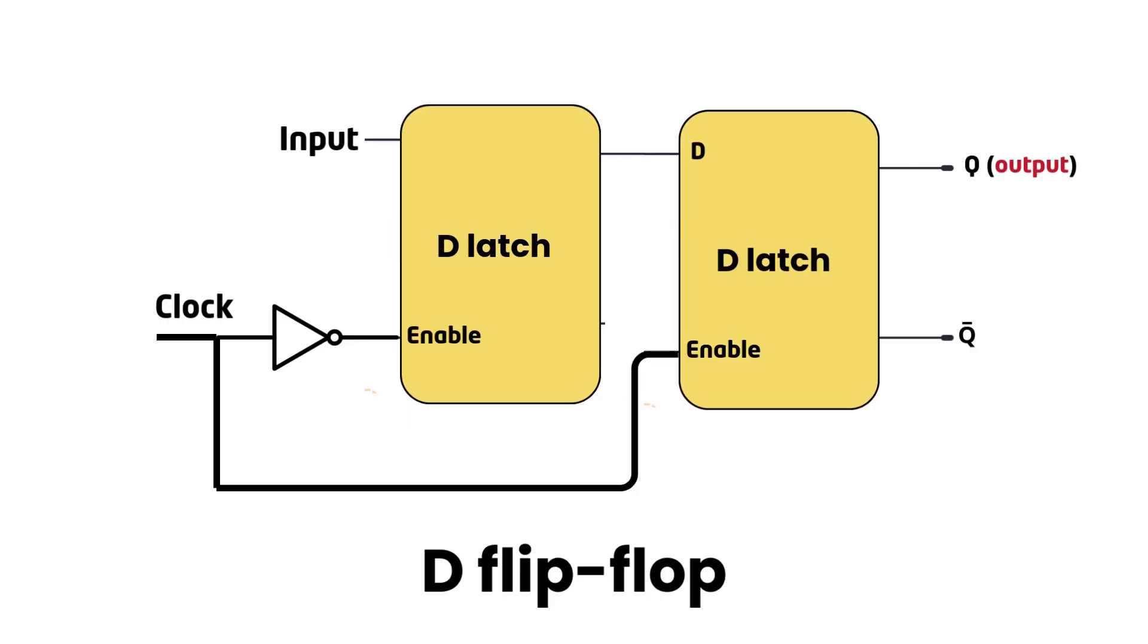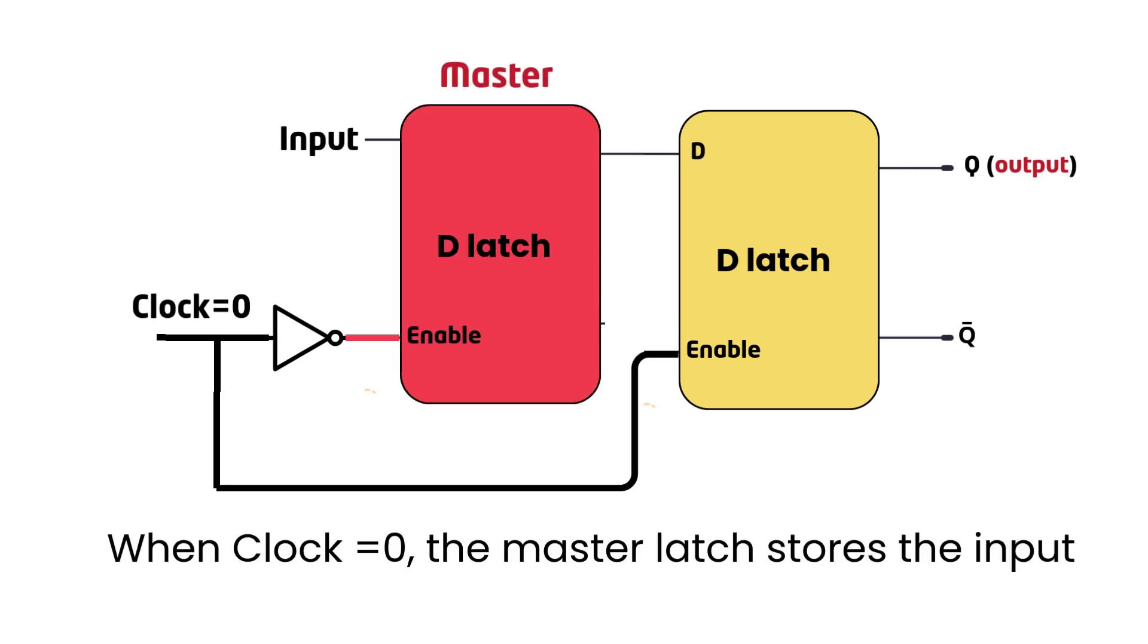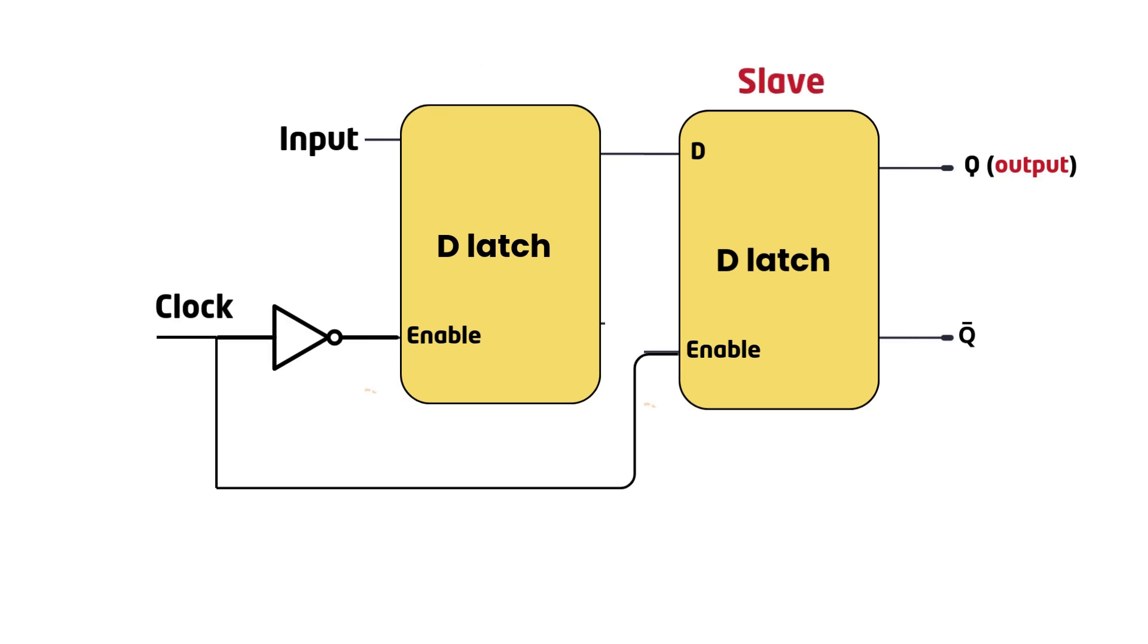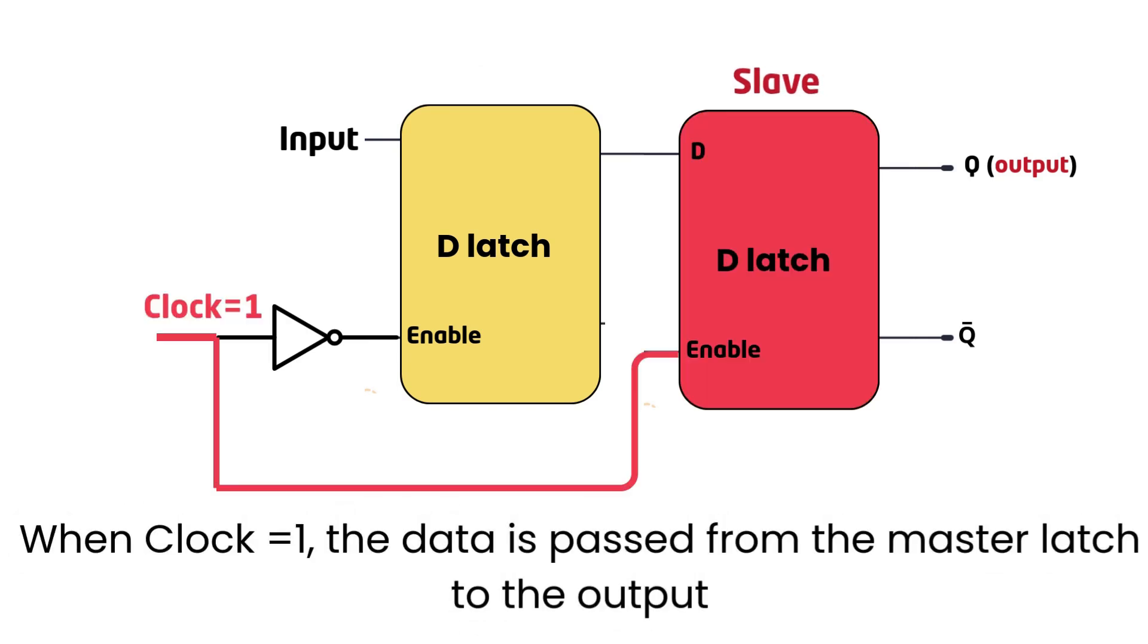A D flip-flop captures data only at the rising edge of the clock, ensuring stable and predictable operation. It is built using two D latches in a master-slave configuration, which allows it to function as an edge-triggered device. The first D latch is called the master latch. This latch is enabled when the clock is low. It captures the input value but does not yet pass it to the output. The second D latch is called the slave latch. This latch is enabled when the clock is high. It takes the stored value from the master latch and transfers it to the output Q. The final output only updates on the clock's rising edge, ensuring edge-triggered behavior.